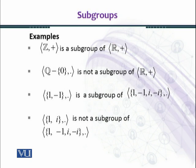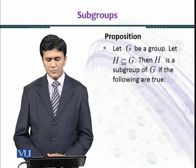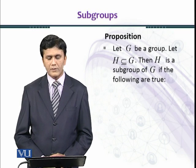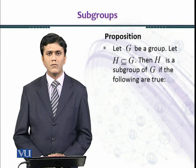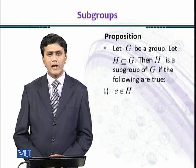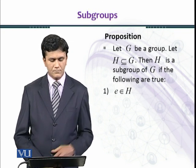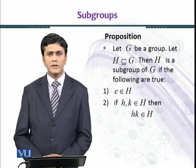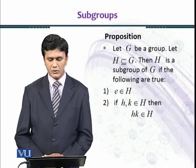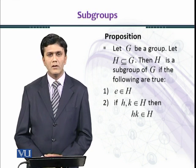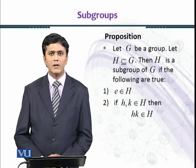Now we consider a proposition. Let G be a group. Let H be a subset of G. Then H is a subgroup of G if the following conditions are satisfied: (1) identity element belongs to H; (2) closure property holds in H under same binary operation - if h, k belongs to H, then h * k belongs to H.